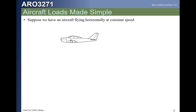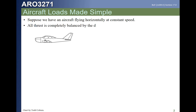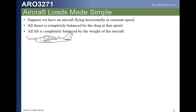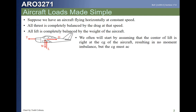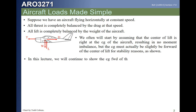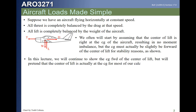We talked last time about the load factors and the factors of safety. Now imagine we have an aircraft flying horizontally at constant speed — thrust is completely balanced by drag and lift is completely balanced by weight. A stable aircraft will have a center of gravity forward of the center of lift, so the tail develops a downward force, but we can often neglect that and assume the CG is at the center of lift to simplify our analysis.